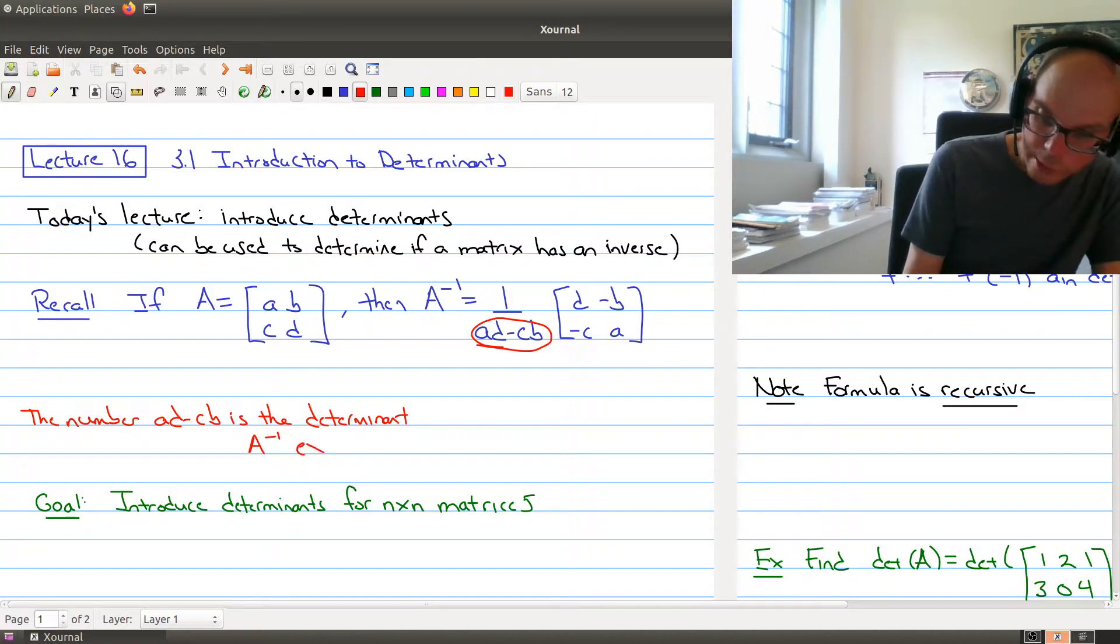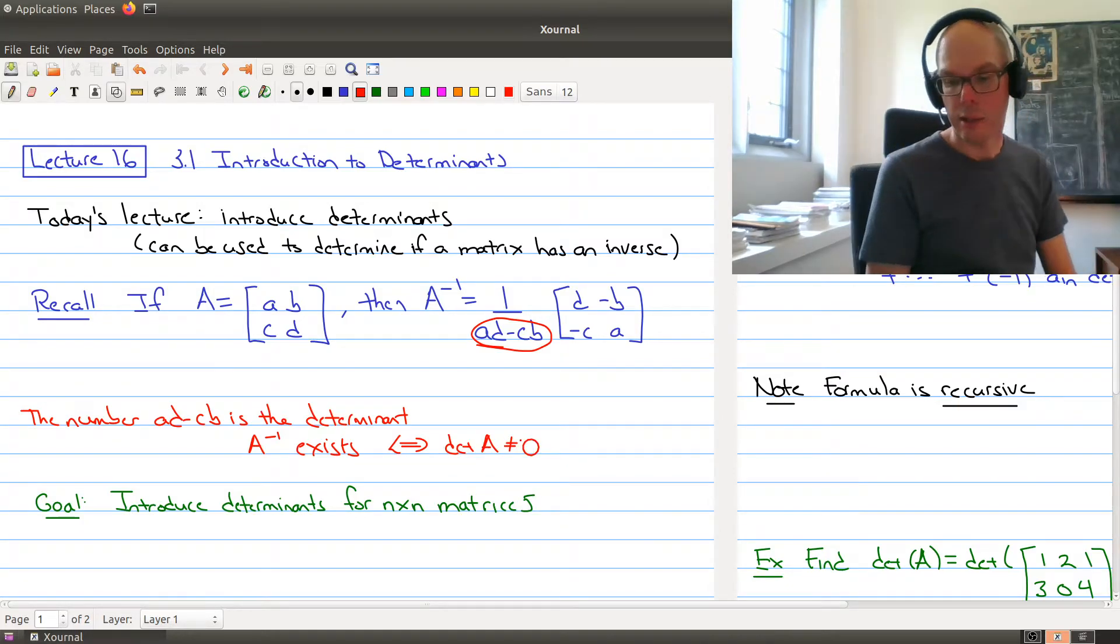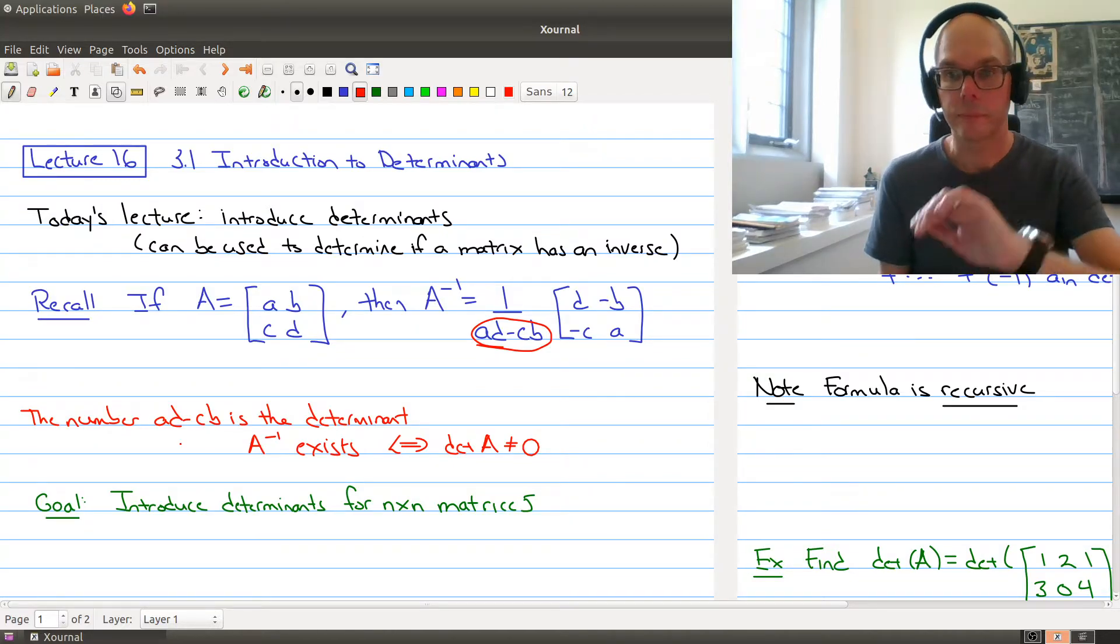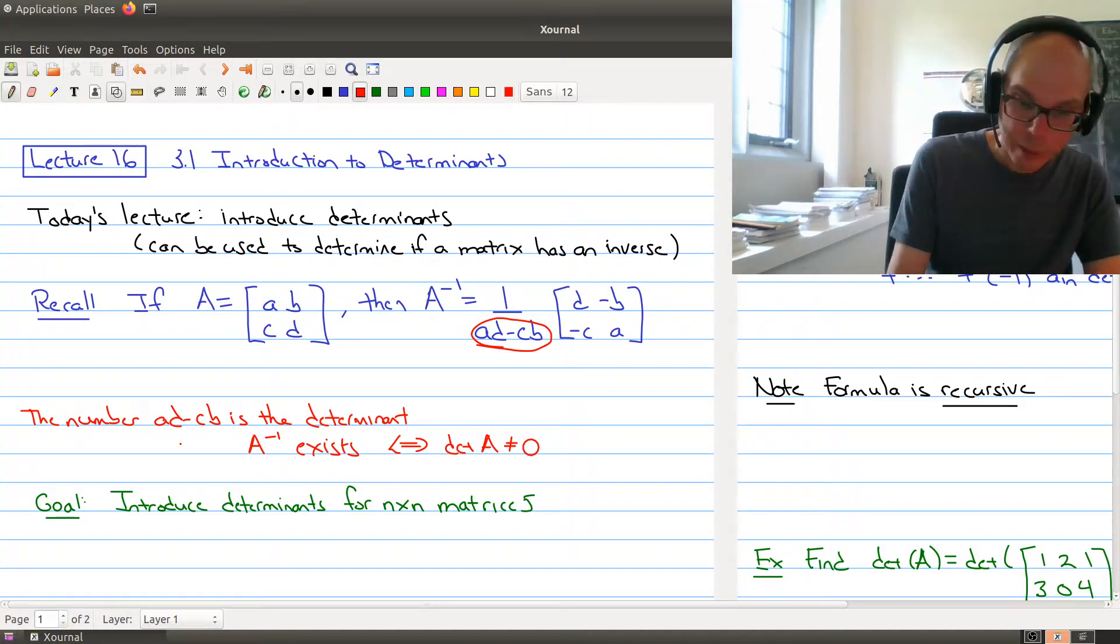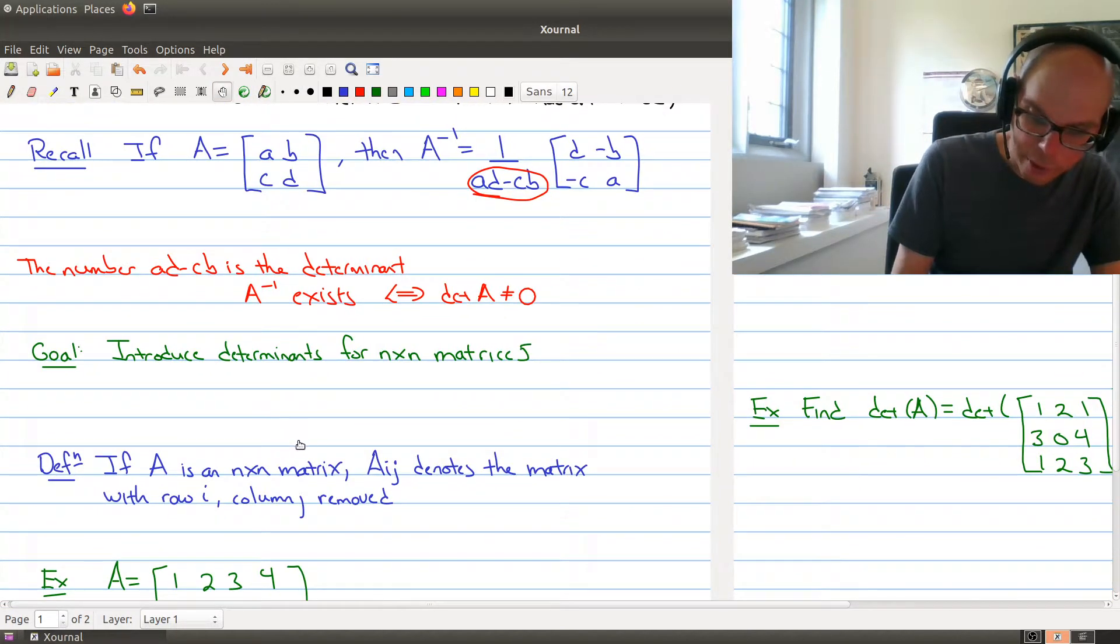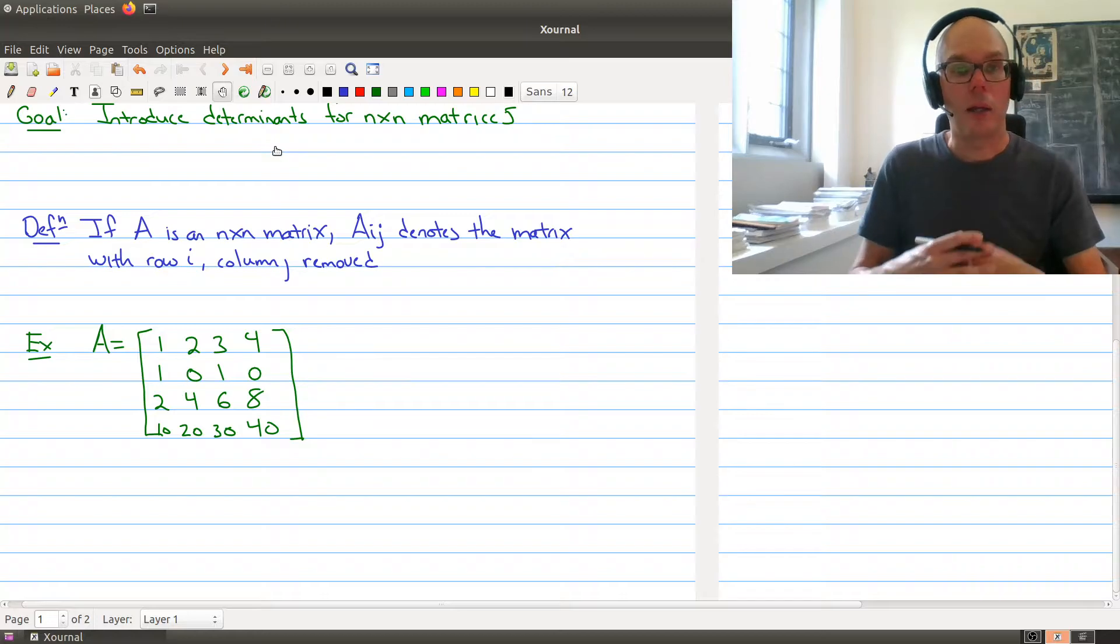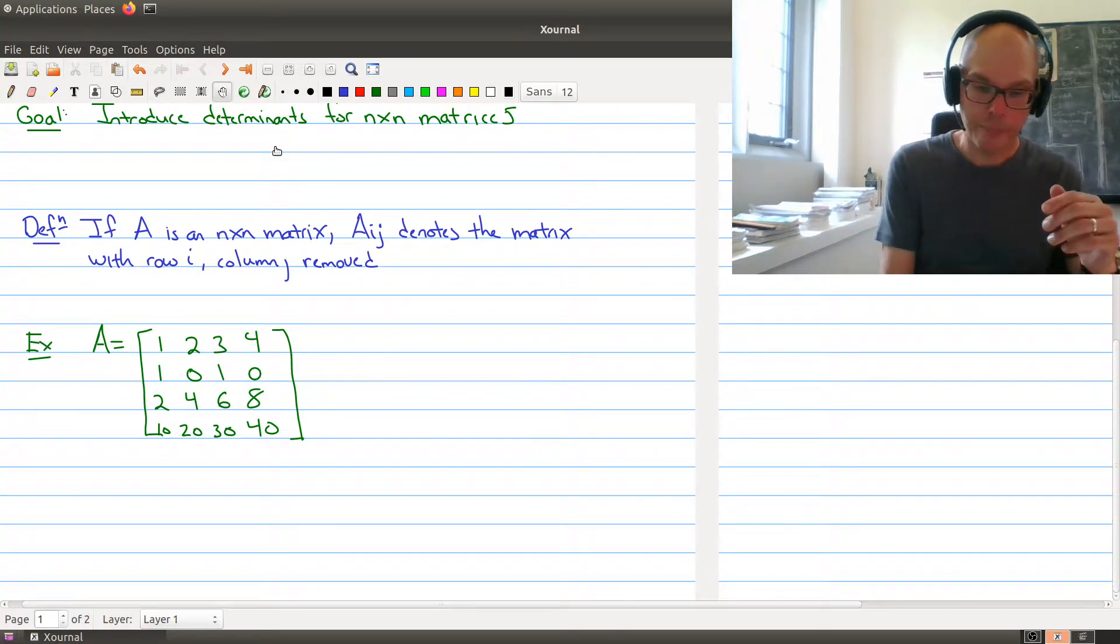So the number AD minus CB is the determinant of a 2x2 matrix. And notice that we have the property that the inverse exists if and only if the determinant of A does not equal 0. And so what we're going to be doing is looking at n by n matrices, and what we want to do is build a number, because that's what AD minus CB is, build a number that kind of captures whether our matrix has an inverse or not. Okay, so that's our goal for today. To start to do this goal, we have to introduce some notation.